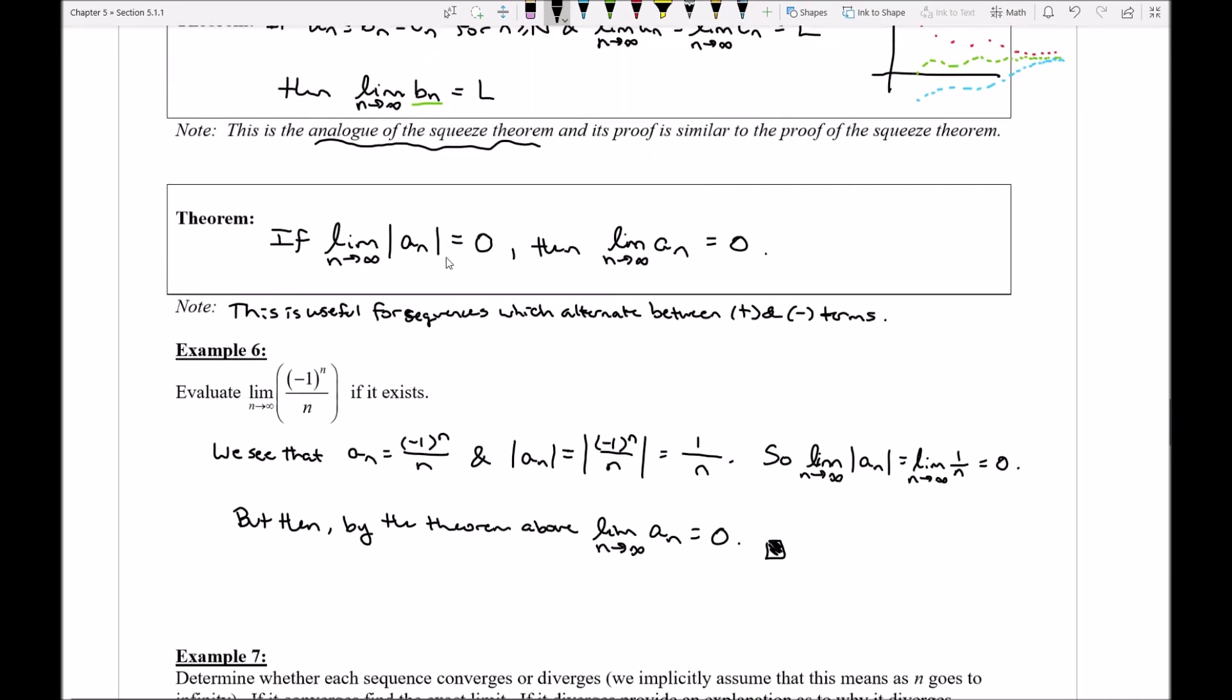Go back to that theorem again. What does the theorem tell me happens if I calculate the limit of the absolute value and I get 1 back? What does it say? It says nothing. It doesn't tell me anything about what happens if I get a limit of 1. It only tells me what happens if I get a limit of 0. So actually, this theorem is not going to be very useful on this question.